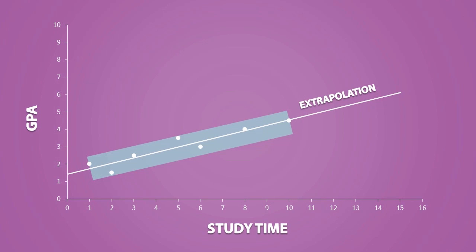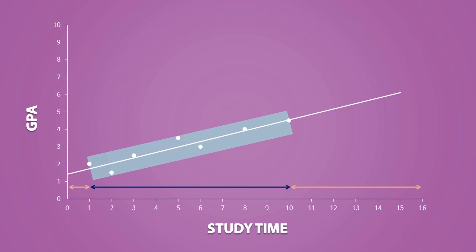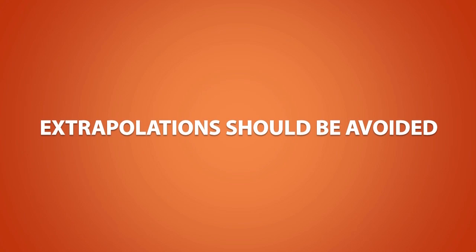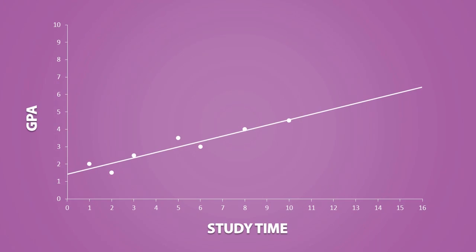In other words, the range of X values in this example goes from 1 to 10, and any predictions using X values outside of 1 to 10 is an extrapolation. Extrapolations should be avoided if possible, and I will show you why.